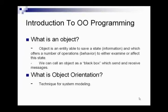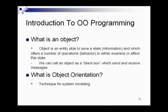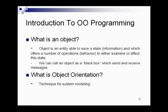The next term is object orientation. Object orientation is a technique for system modeling. It offers a number of concepts which are well suited for this purpose. There is a word called 'system' in the definition of object orientation — it can be either a dedicated software system or a system in a wider context.